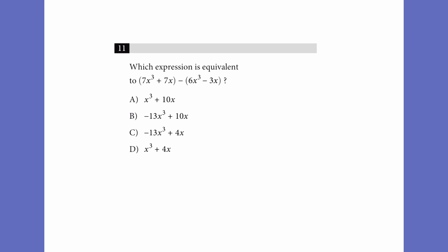For an addition and subtraction problem — when asked which expression is equivalent — we see that all answer choices are distributed out with no parentheses, which is a hint we'll probably have to distribute. Let's start by distributing out the minus sign so we don't get confused. We'll make it a negative x cubed plus 3x, since a double negative is just a positive. Now we can add like terms: we have 7x cubed and negative 6x cubed, so 7 minus 6 equals 1x cubed. Then we have 7x plus 3x, which is 10x. So our answer is A.